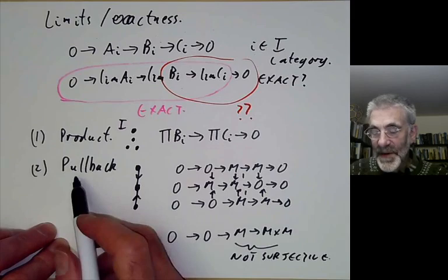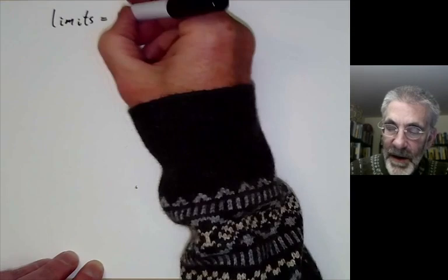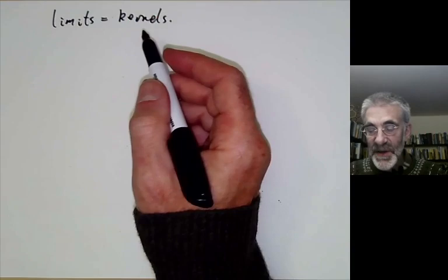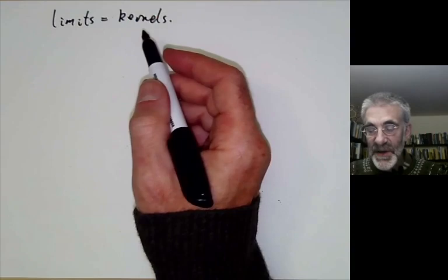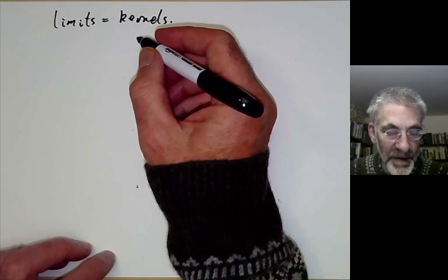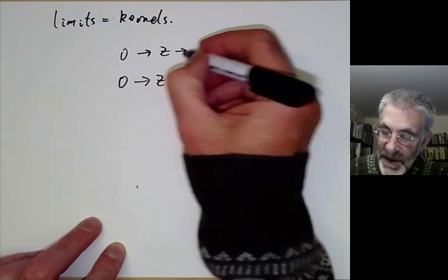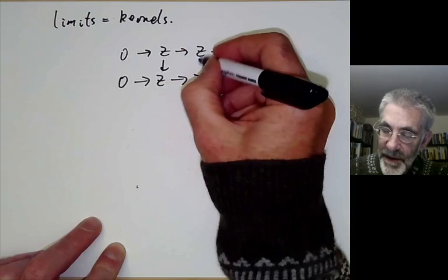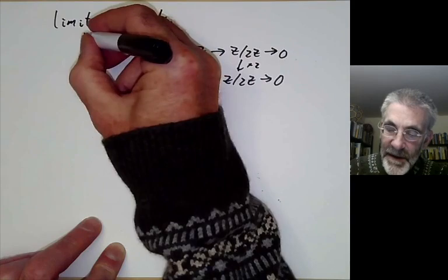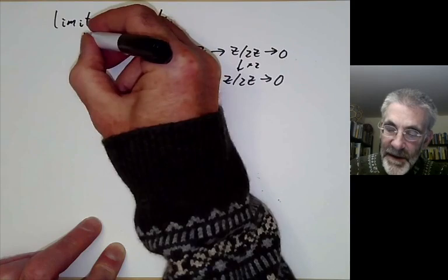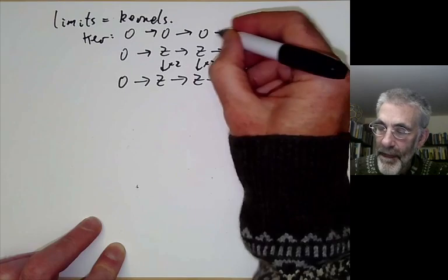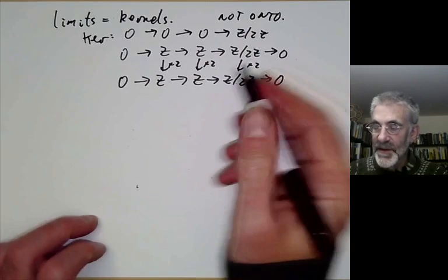So pullbacks do not preserve exactness, and we saw in the previous lecture that pushouts don't preserve exactness either — the two things are just analogous. The next case is when the limits are kernels, and taking kernels completely fails to preserve exactness. The simplest example is 0 → ℤ → ℤ → ℤ/2ℤ → 0, with the map between two copies being multiplication by 2. The kernels of the first two maps are 0, but the kernel of the multiplication-by-2 map on ℤ is definitely not 0, so this map is not onto.